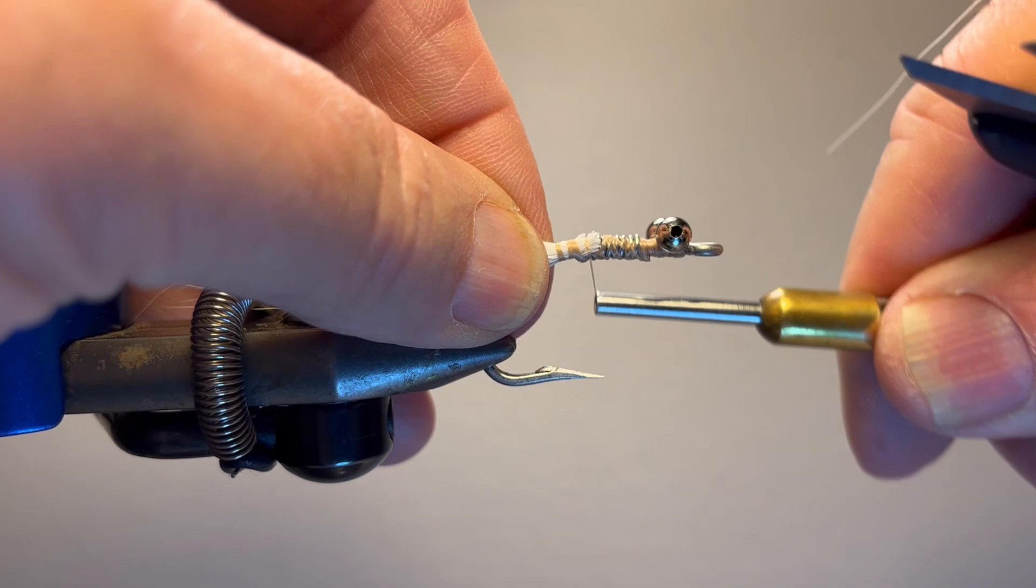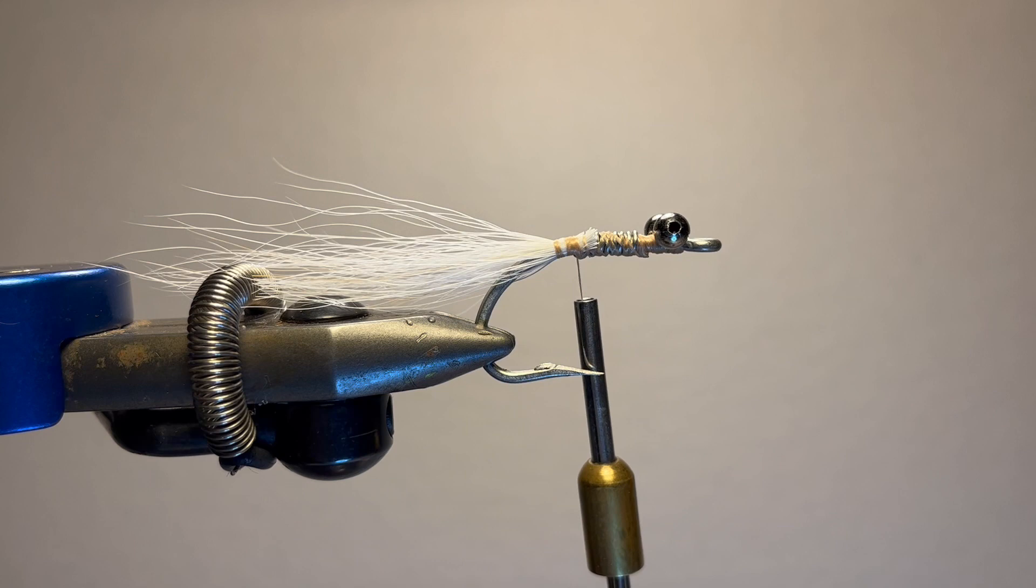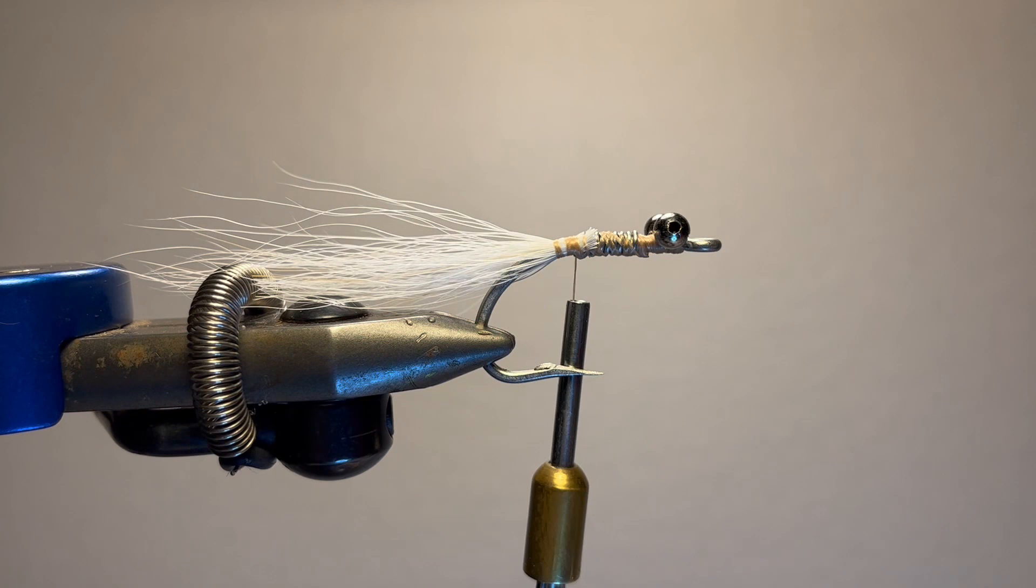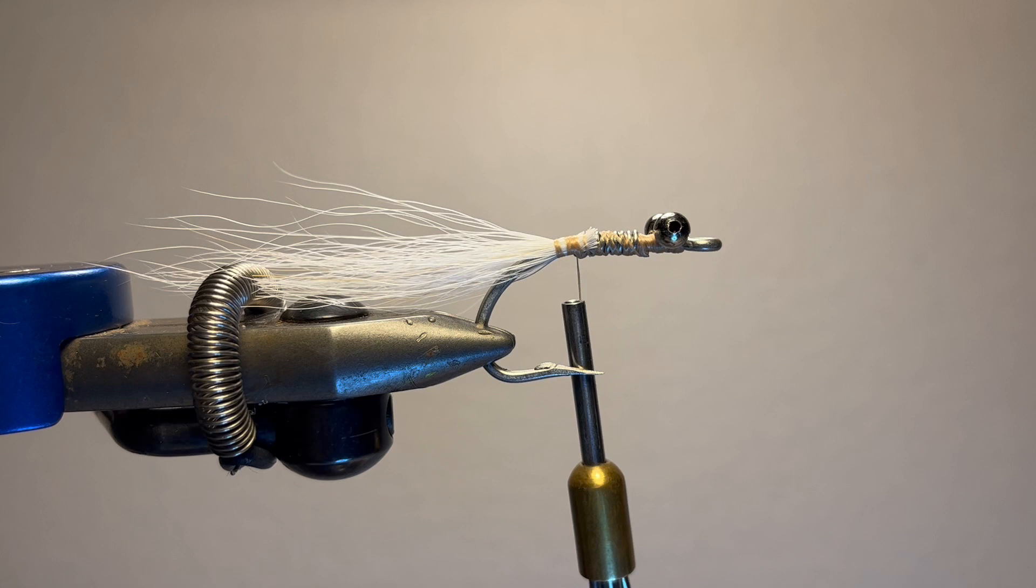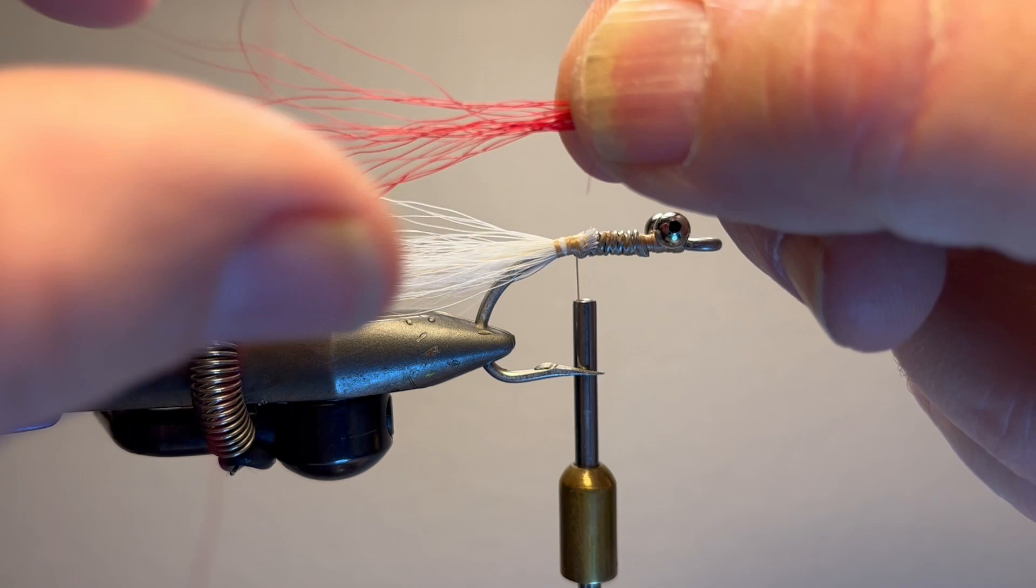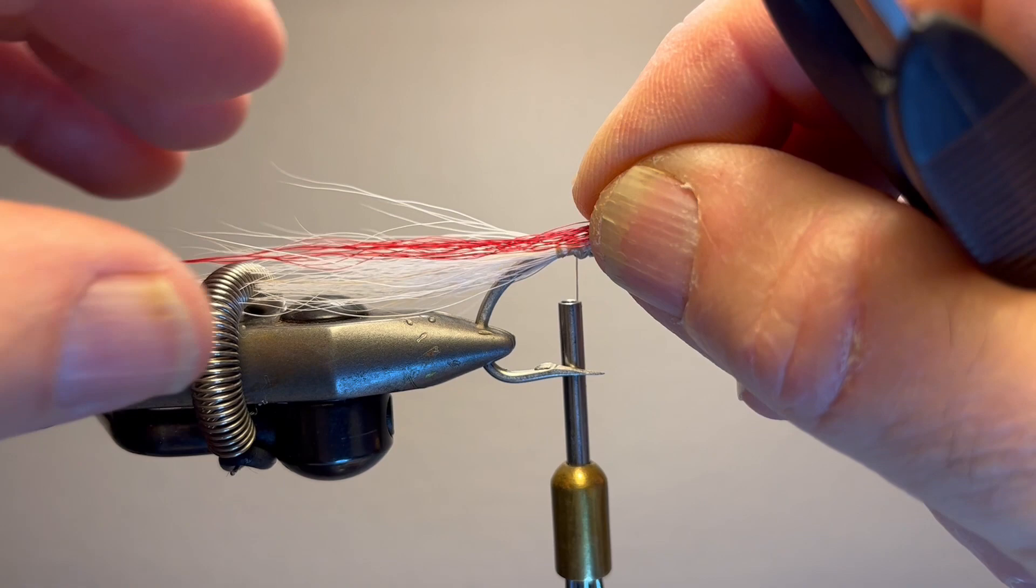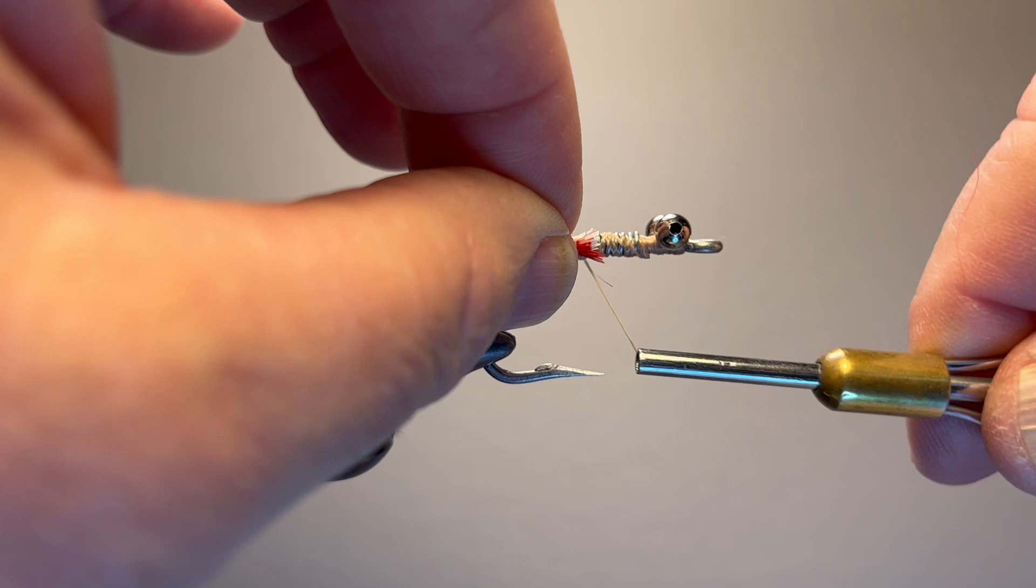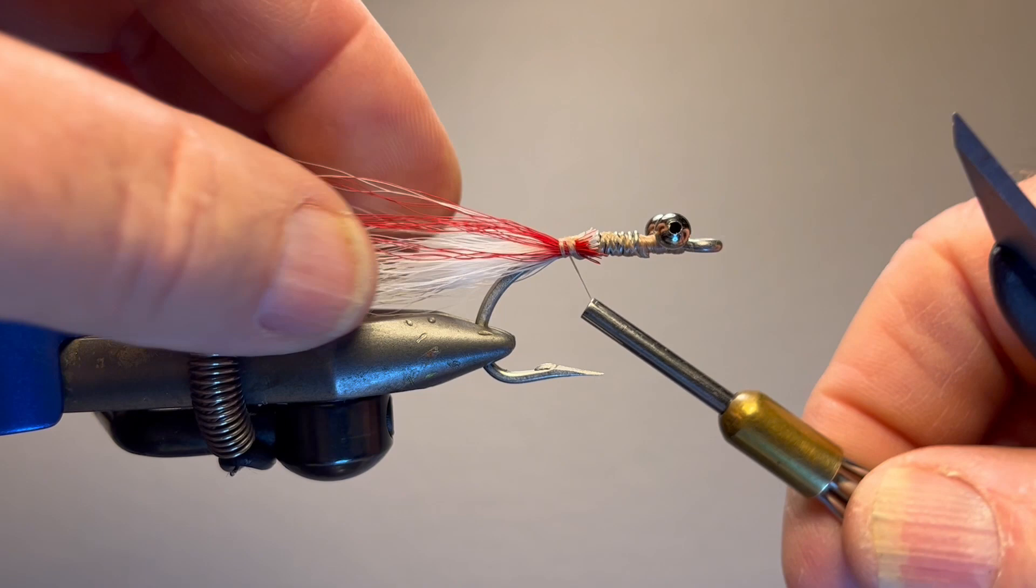Now I'm going to take a little bit of red, and I mean very little, red bucktail. You're going to take a few strands and I'm just going to put a little bit right down the side, on each side here. And do the same on the other side.